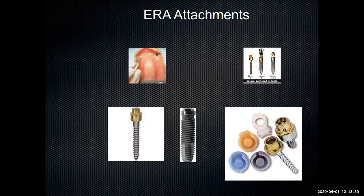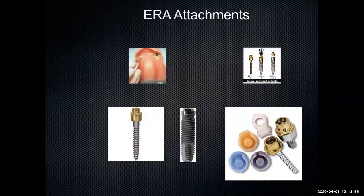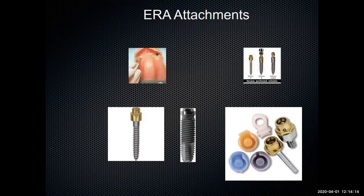Polling question: which attachment system do you feel has the best results — the Locator, ERA, the Rhein Equator, or the Brånemark? Results show 75% for the Locator. Locator is popular. There are so many attachment systems out there — I only listed four and there are probably about 50 of them — but Locator is a good, reliable attachment system.